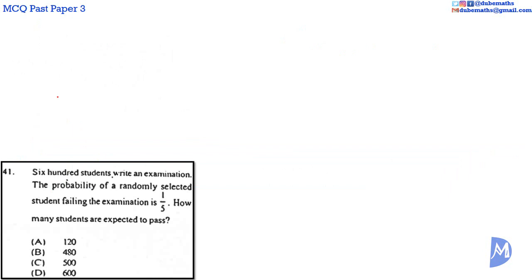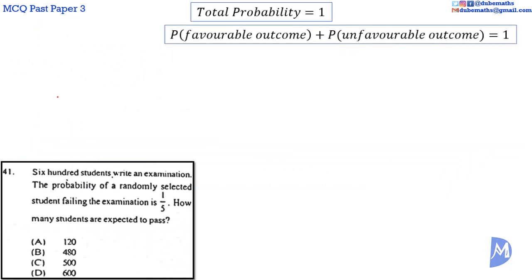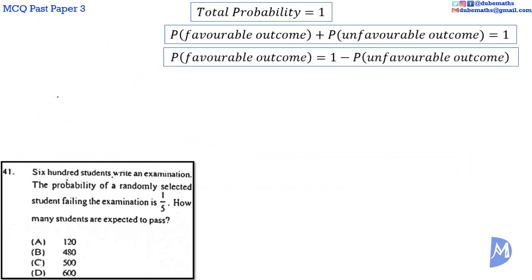Question 41. Total probability is equal to 1. The probability of a favorable outcome added to the probability of an unfavorable outcome is equal to 1. It follows that the probability of a favorable outcome is equal to 1 minus the probability of an unfavorable outcome.